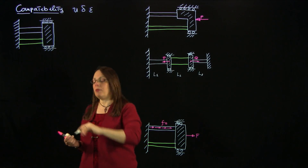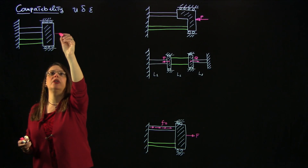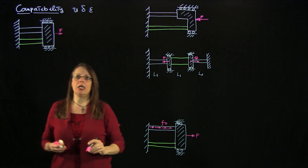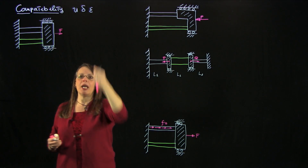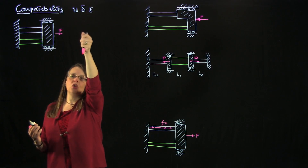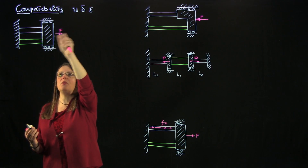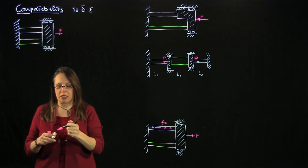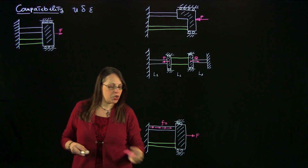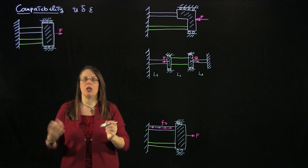In a problem like this, in which we had a force F applied to the block, and the block can move left and right, essentially everything is controlled by the fact that the block moves. As the block moves, the bars change their length. So the kind of relationships we're going to find are relationships between the displacement of the block, the elongation of the bars, and so on.